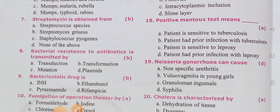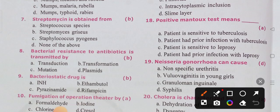Streptomycin is obtained from Streptomyces griseus. Option B is the correct answer.